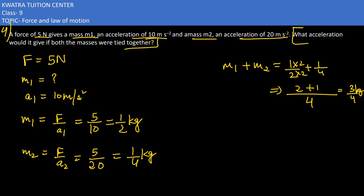Now in this case we can understand that the masses have been added together. We need to find the acceleration which would be force over mass. So force is 5 and mass is 3 by 4. Take 4 to the numerator, it becomes 5 into 4 divided by 3, so 20 by 3 meter per second square.